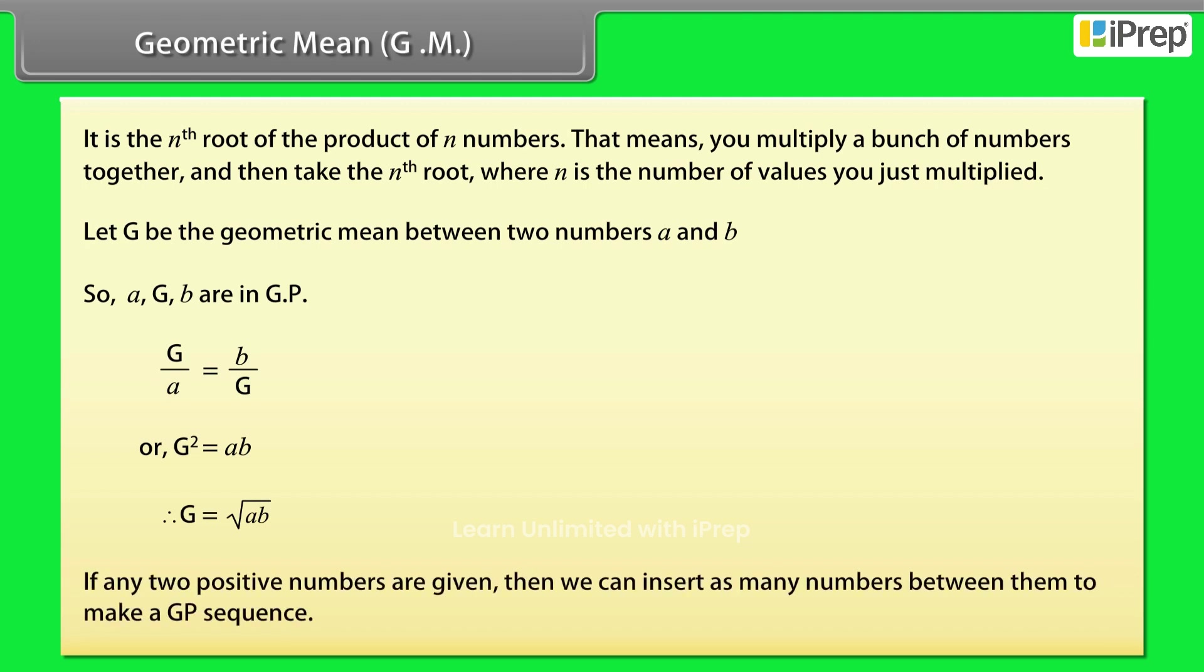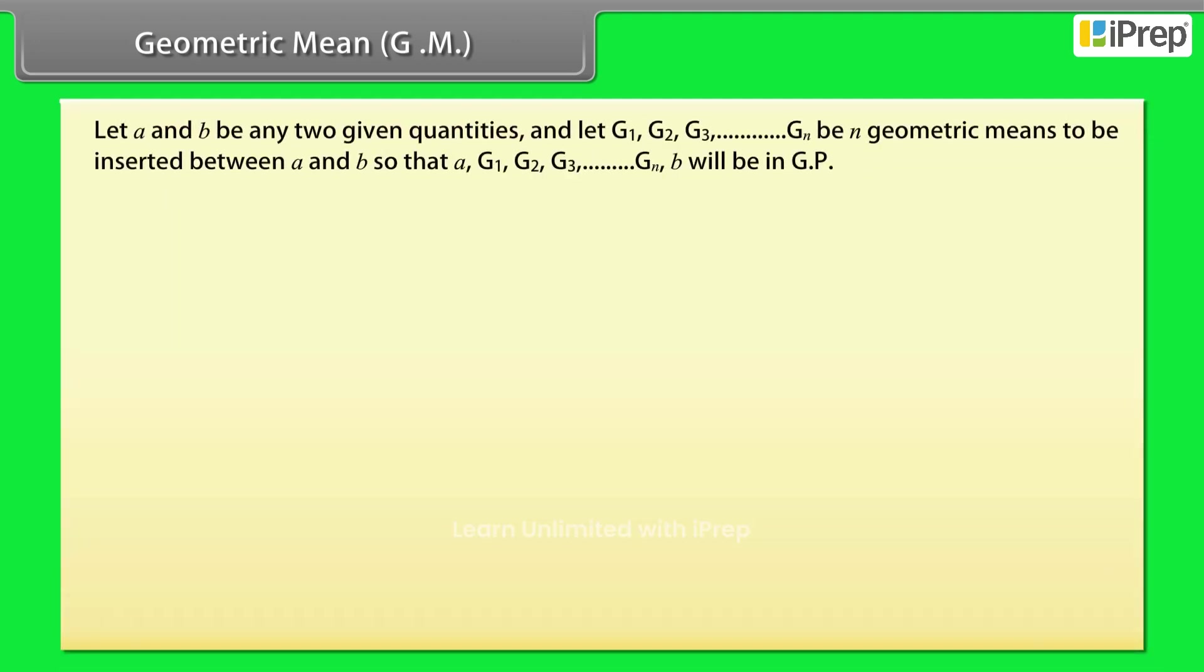If any two positive numbers are given, then we can insert as many numbers between them to make a GP sequence. Let a and b be any two given quantities, and let G₁, G₂, G₃ up to Gₙ be n geometric means to be inserted between a and b so that a, G₁, G₂, G₃ up to Gₙ, b will be in GP.